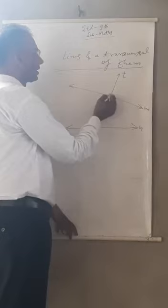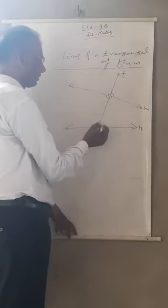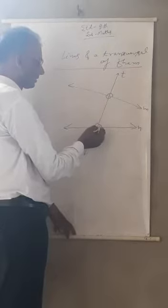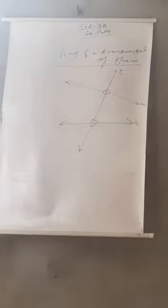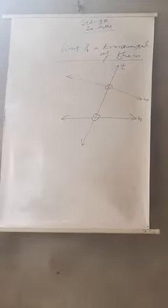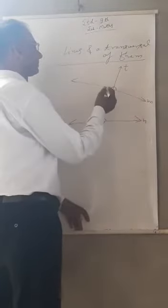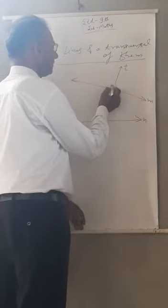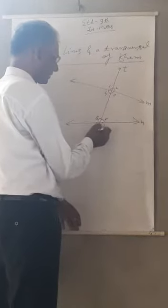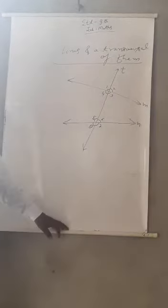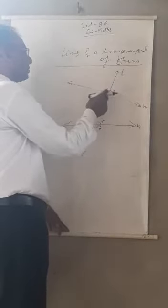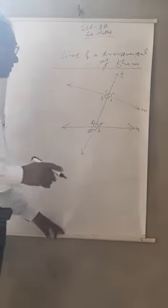We have to label the angles. The angles are numbered 1, 2, 3, 4, 5, 6, 7, 8. These are the angles. We write 1, 2, 3, 4, 5, 6, 7, 8 to label each angle. So dear students, pay attention. There are so many pairs.